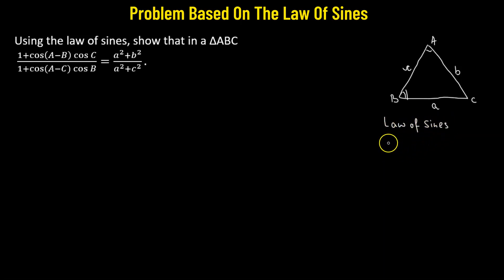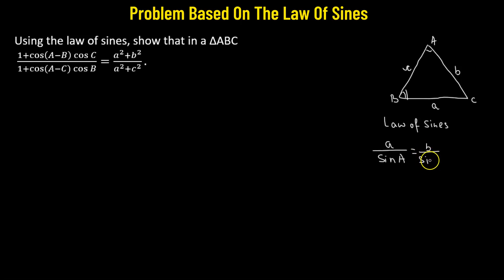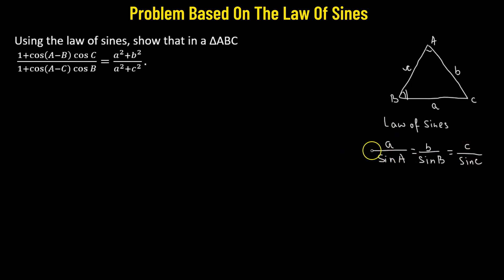The Law of Sines states that the ratio of side a to sine of angle A equals the ratio of side b to sine of angle B, which also equals the ratio of side c to sine of angle C. We take these three equal ratios and set them equal to a constant lambda.